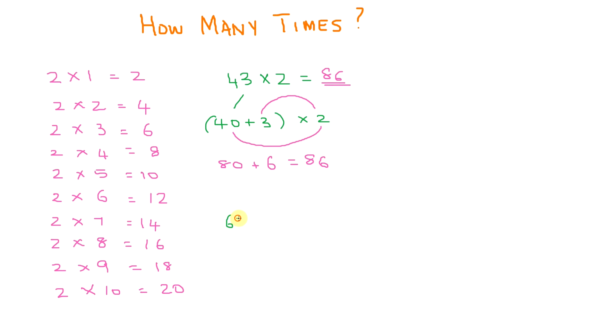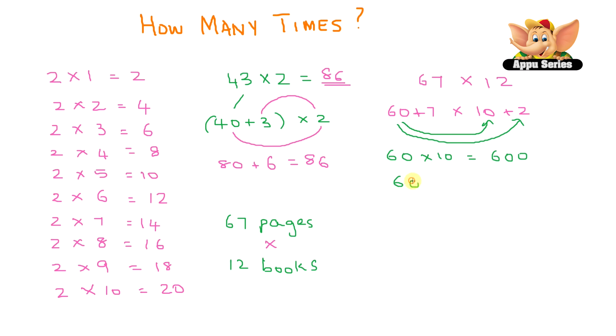Let's try one more example. Say we have a book, and this book has 67 pages. I know, that's a lot of pages to read, isn't it? Well anyway, what will the total number of pages in 12 of these kind of books be? So let's first split 67 into 60 plus 7 and 12 into 10 plus 2. So let's first multiply 60 times 10, which is 600. Then 60 times 2 is 120. Then 7 times 10 is 70. 7 times 2 is 14.